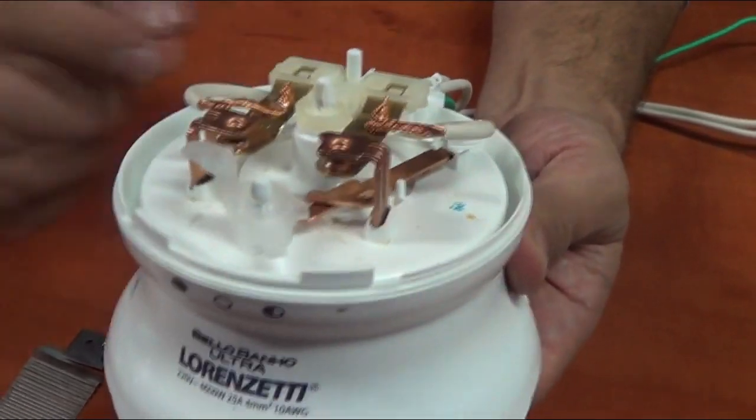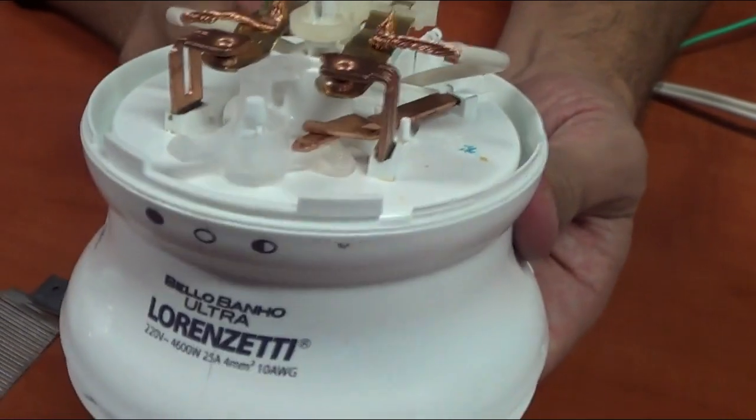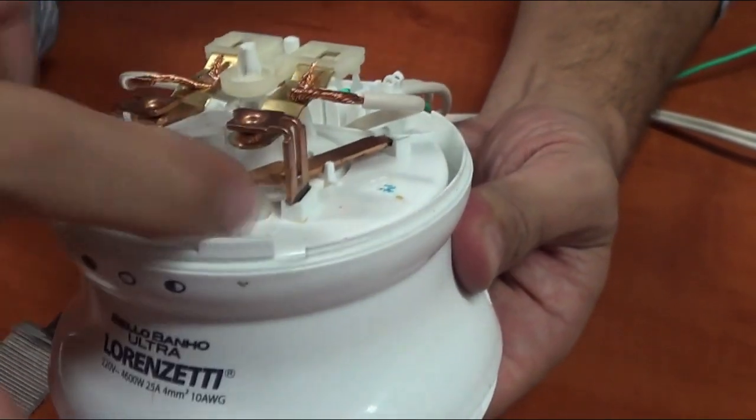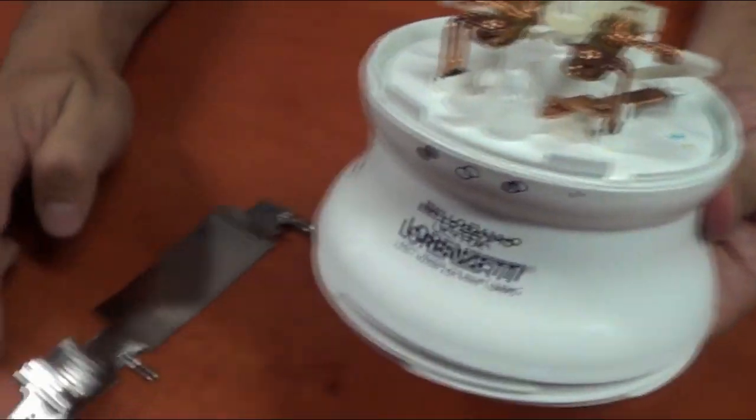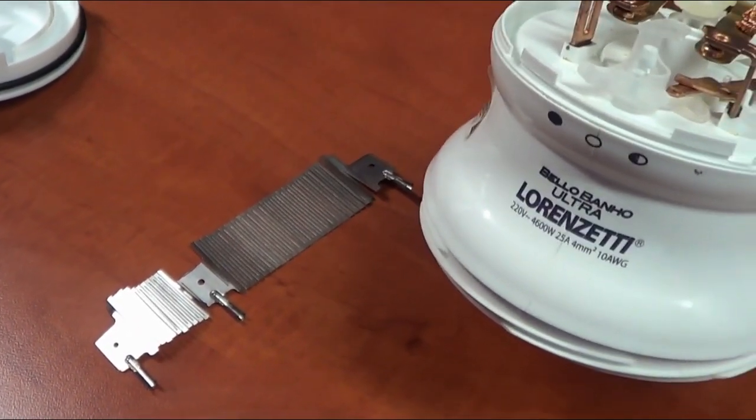If we switch the water back off again, we move it onto the hot setting. We switch the water back on. You can see one, two, three terminals are making contact. Which means you've got one, two, three terminals on your element working. Which will give you the hot water.